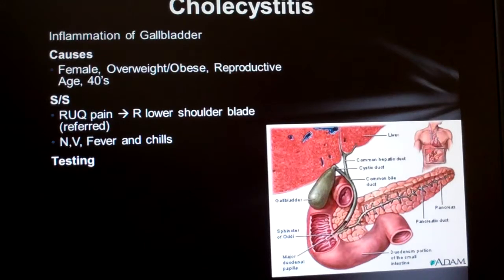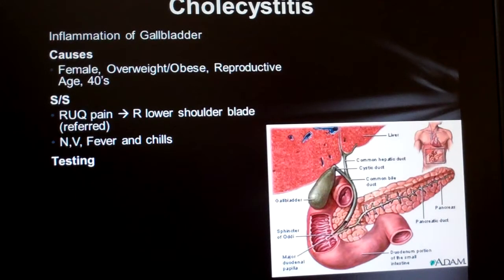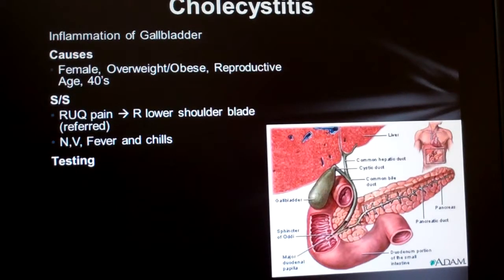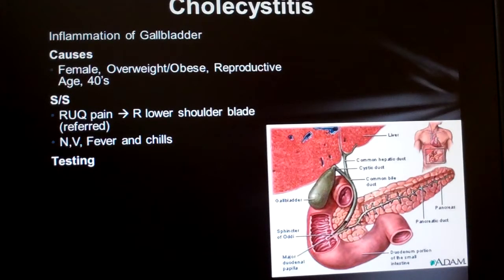Since it's an -itis, we can almost automatically add fever and chills into the signs and symptoms list. And since the gallbladder is involved with enzymes and bile going into the liver — our poison filter — it makes sense that we'd see nausea and vomiting.